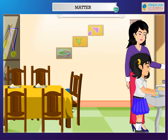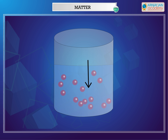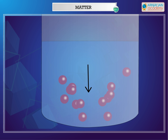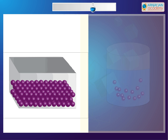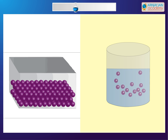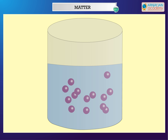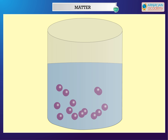You cannot press or hold a liquid. In a liquid, the molecules are not packed very closely together. Since there is more space between the molecules of a liquid compared to a solid, liquids have no fixed shape and can flow. In other words, liquids have no fixed shape but they have a fixed volume.